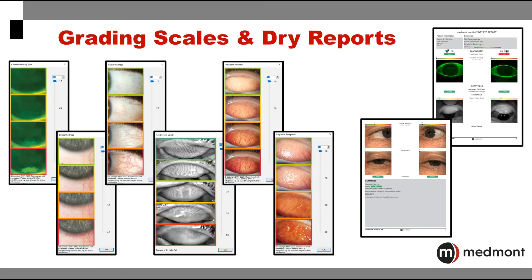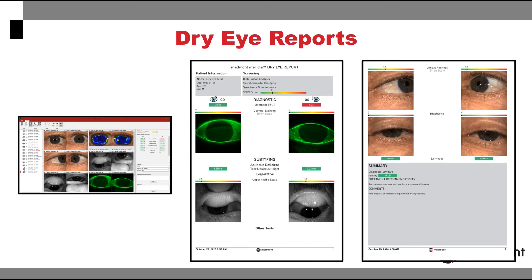The Meridia includes comprehensive grading scales that go hand in hand with the dry eye reports that you can create. The Meridia allows you to customize the dry eye report specific to your practice and your patient, allowing you to include all of the data and imaging you collected with the Meridia, as well as enter and add other instrument data and findings into the dry eye report. This allows you to present the findings in a very clear graphic manner and provides a tool for you to discuss the treatment options that you recommend.